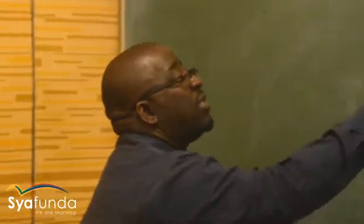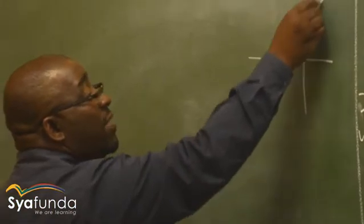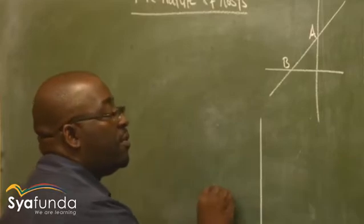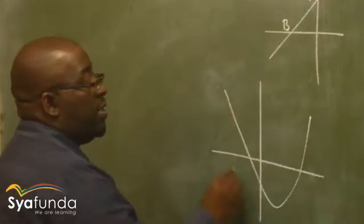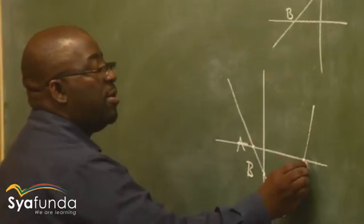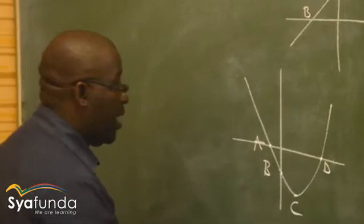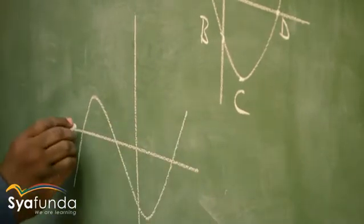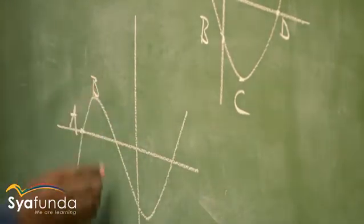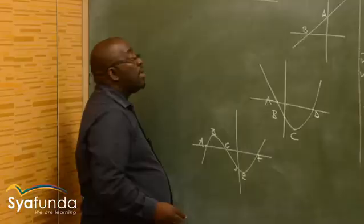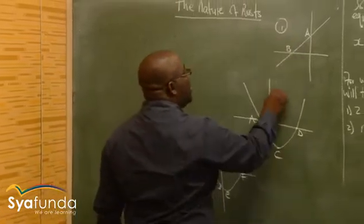When we look at the nature of roots, we've got different types of graphs. Looking at the first graph, there are points A and B. The second graph has points A, B, C, and D. The third graph has points A, B, C, D, E, and F. Let's look at graph number one, then graph number two, then graph number three.